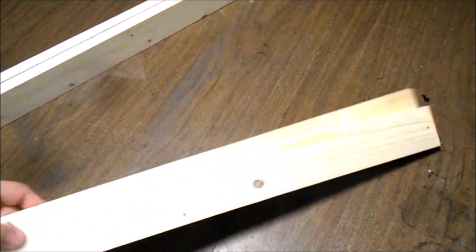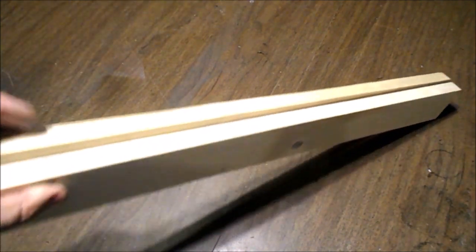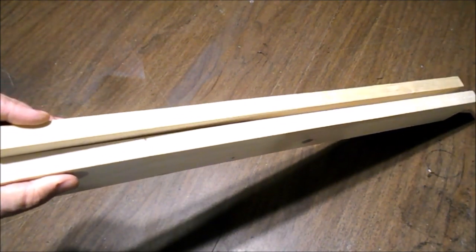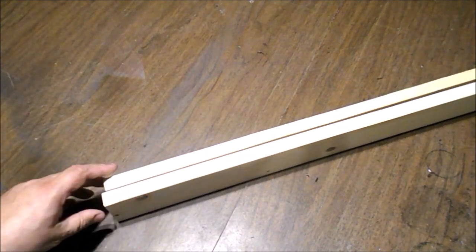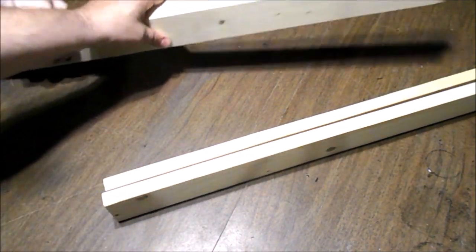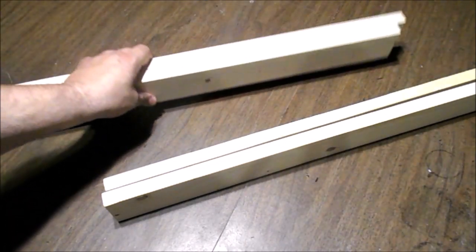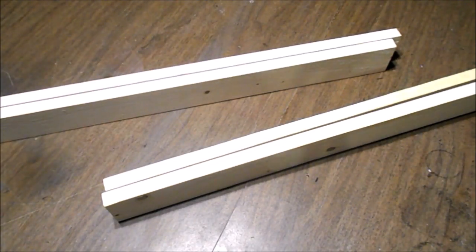Then we cut two boards, 22 inches long, plus the width of two more boards, so that the inside will be 22 by 30.